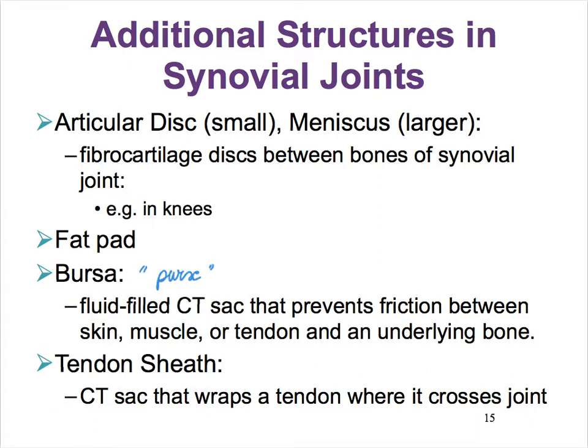That bursa typically sits between a hard spot and a soft spot. And similar in principle is the tendon sheath, except that it's not sac-like—it's more like a wrapping around a tendon. Let's take a look at some pictures to better understand these two structures.